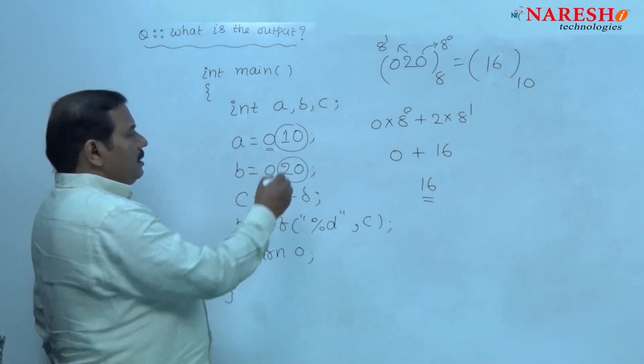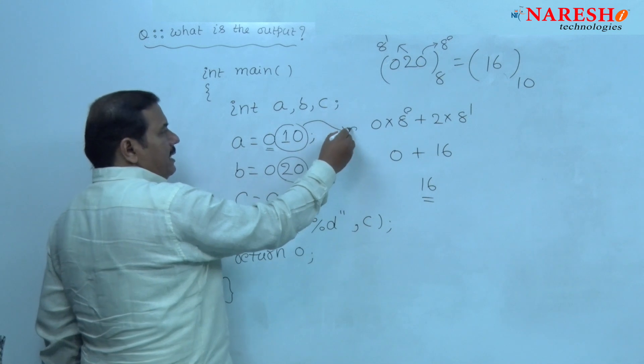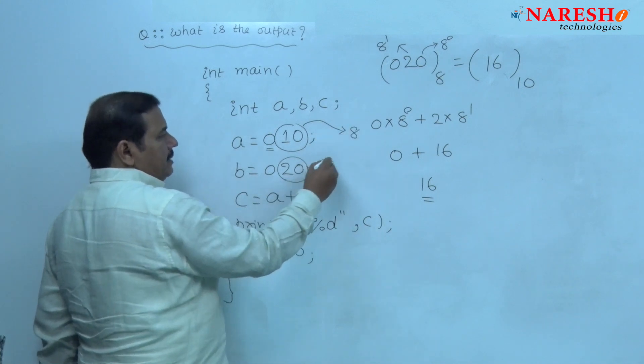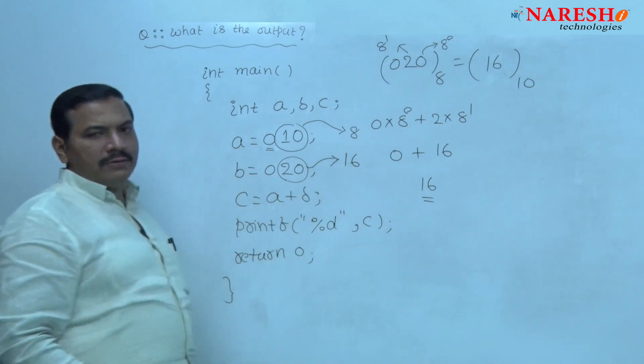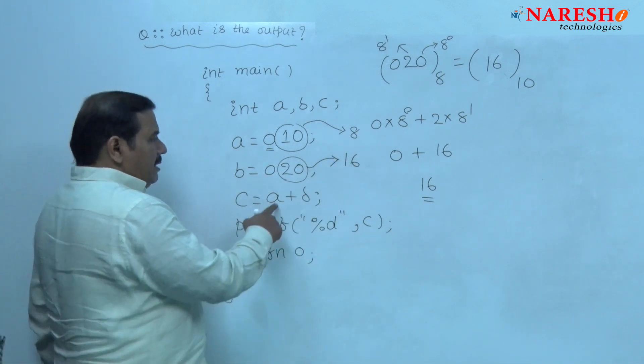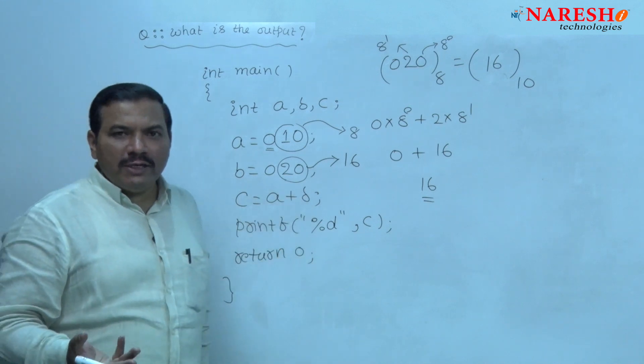The decimal value of this octal integer is 8 and the decimal value of this octal integer is 16. 8 plus 16 is 24.